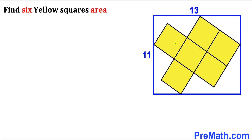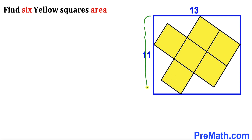In this video we have six identical yellow squares fully inscribed in a blue rectangle as you can see in this diagram, such that the length of this rectangle is 13 units whereas the width of this rectangle is 11 units. Our task is to calculate the area of all these yellow squares.